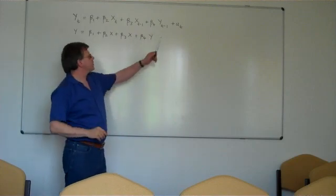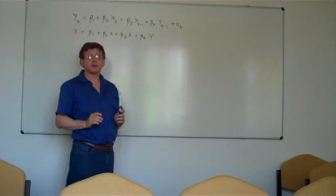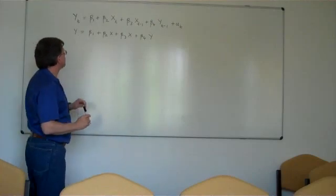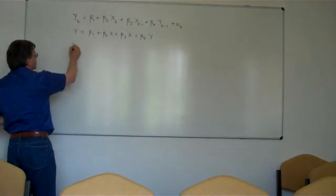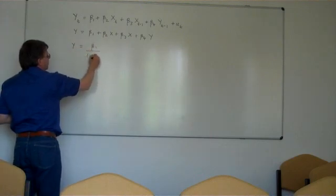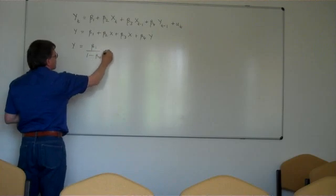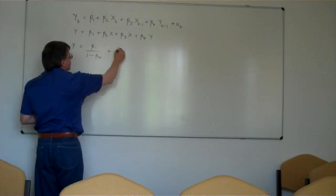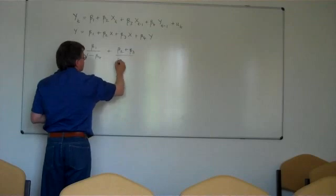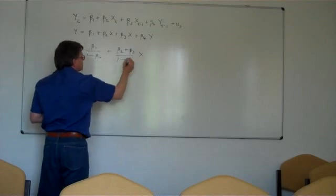And we ignore the random error term because we're solving for an equilibrium solution here. So solving this equation out, we'll have y equals beta1 over 1 minus beta4 plus beta2 plus beta3 over 1 minus beta4 times x.